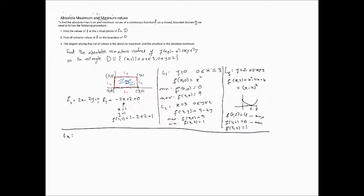For L4, x = 0 and y is between 0 and 2. So f(0,y) = 2y. The minimum value is f(0,0) = 0, and the maximum is f(0,2) = 4.